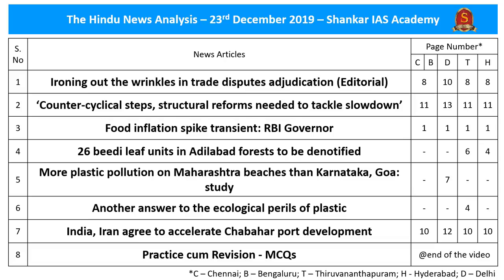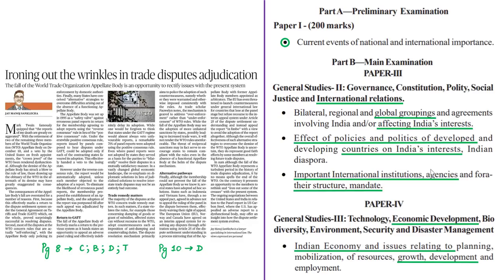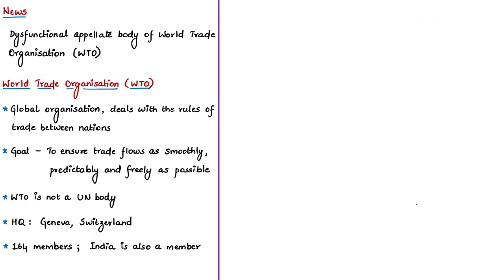This editorial speaks about the dysfunctional appellate body of the World Trade Organization. We shall see about the dispute settlement mechanism of the WTO, the different stages in the settlement process, the present issues of this dysfunctional appellate body, and the alternative ways and means to resolve disputes discussed in this editorial. The syllabus relevant to the analysis of this editorial is given here for your reference. Let us now see about the World Trade Organization in brief.